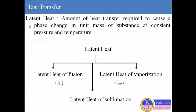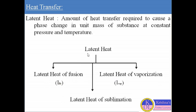The second type is latent heat. Latent heat is the amount of heat required to cause a phase change in a unit mass of substance at constant pressure and temperature. We can subdivide latent heat into three categories: latent heat of fusion, latent heat of vaporization, and latent heat of sublimation. Latent heat is generally denoted by L.